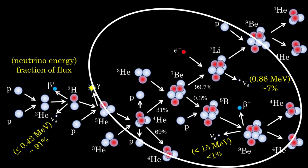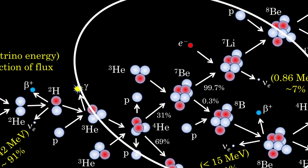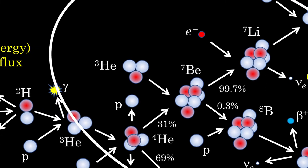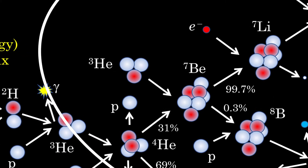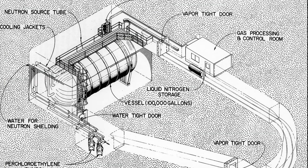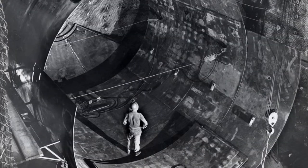But later that year, Bacall realizes he has not properly determined the chlorine-37 capture rate for neutrinos produced by the boron-8 reaction, a branch off the beryllium-7 reaction in the Sun. He corrects the calculation, and the chlorine-37 neutrino capture rate for boron-8 neutrinos goes up by a factor of 20. This makes Davis' experiment seem doable again with a large enough tank. Armed with Bacall's calculations, Davis begins building a large experiment to detect the solar neutrinos in 1965.